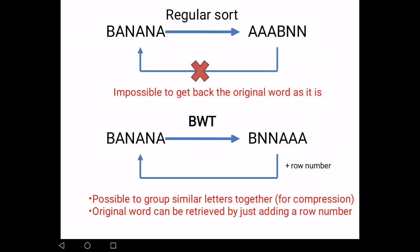So, essentially, what it does is that regular sorting, there's no way for you to remember or to get back the original word. With BWT, after you do the transformation, you remember the row number, which row number contains the original word. With just that information, you can easily retrieve back the original word. And it also allows you to compress, to prepare the data for compression. Thank you.